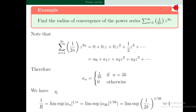Problem number 3: find the radius of convergence of the power series sigma n=1 to infinity (1/2n) * z^(3n). Note that this can be written as 0 + 0·z + 0·z² + (1/2)·z³ + etc. Therefore the coefficient a_n equals 1/(2k) if n is of the form 3k, and 0 otherwise.